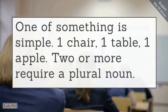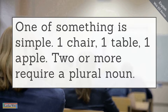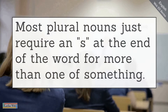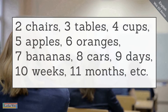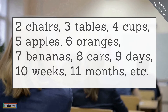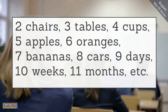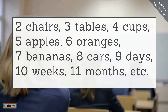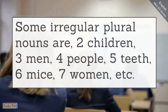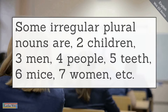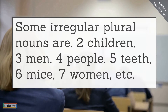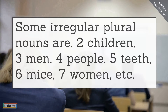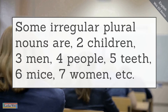One of something is simple — examples like one chair, one table, one apple. Two or more require a plural noun. Most plural nouns just require an S at the end of the word: two chairs, three tables, four cups, five apples, six oranges, seven bananas, eight cars, nine days, ten weeks, eleven months. Some irregular plural nouns are: two children, three men, four people, five teeth, six mice, seven women. These are all irregular plural nouns — you'll notice they're all spelled differently than the noun used for just one.